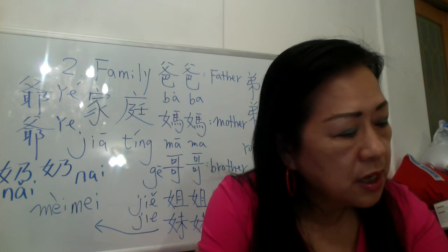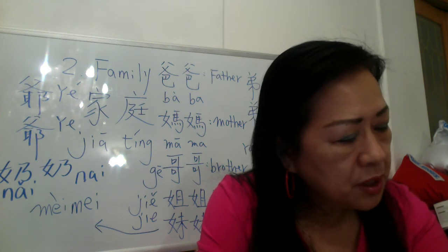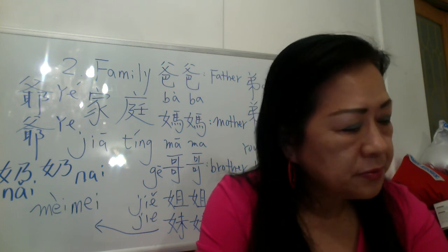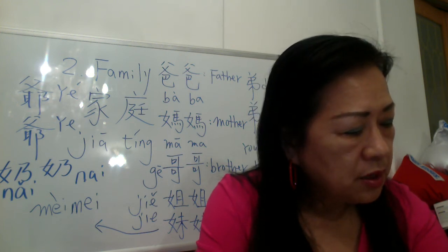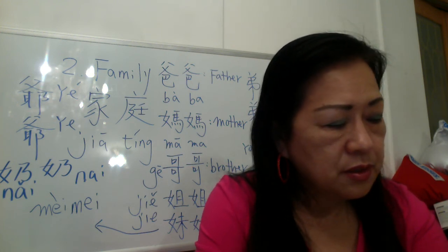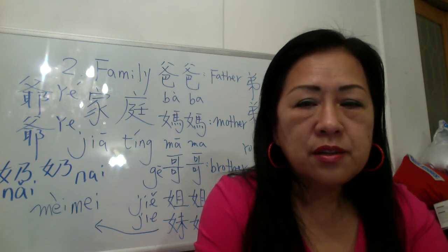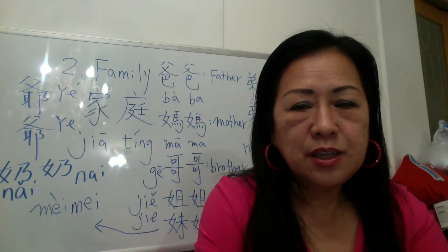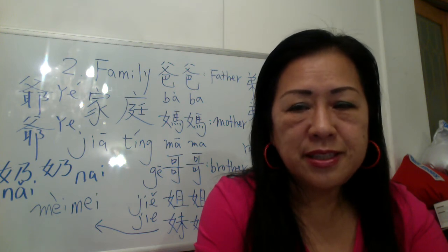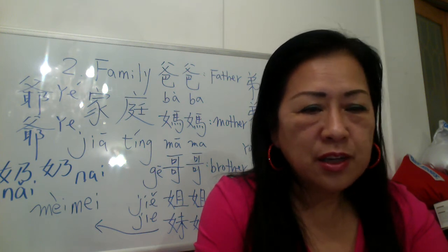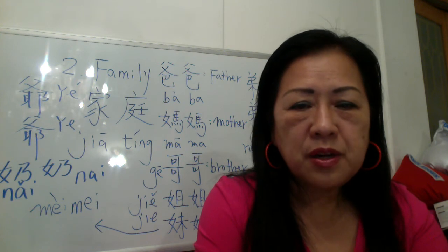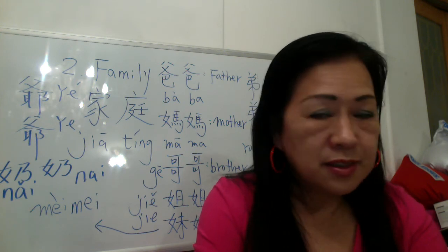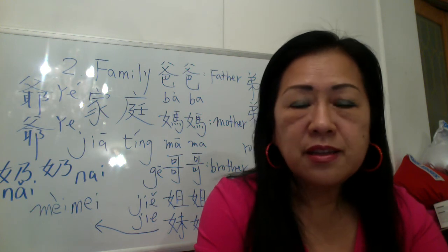Daughter — 女儿，nǚ. Number 20: not, without — 没有. I do not have an older sister: 我没有姐姐. I do not have an older brother: 我没有哥哥. 没有 means 'not have' or 'without.'